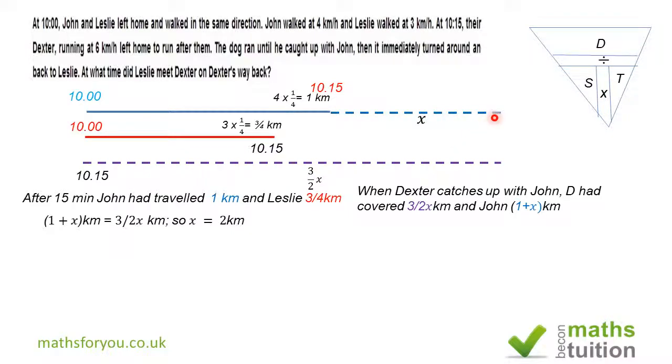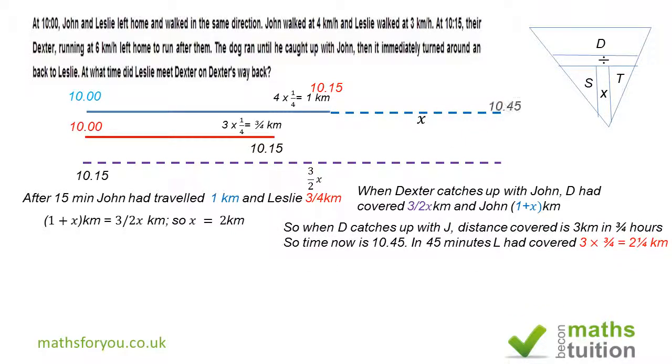Meanwhile, Leslie is still walking. In 30 minutes, she will have walked twice three quarters, which is one and a half. If you add one and a half to three quarters, you get two and a quarter. So by the time Dexter meets John, Leslie will have covered two and a quarter kilometers, and the time is 10:45. In effect, the gap between where Leslie was when Dexter met John is three quarters of a kilometer.